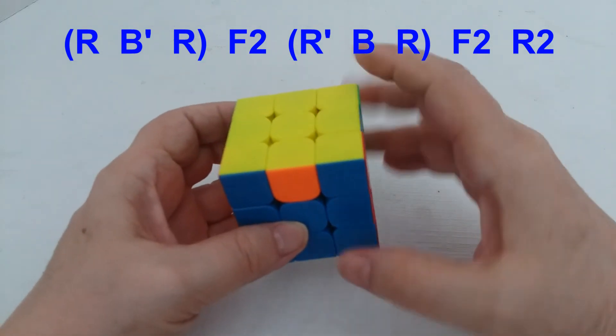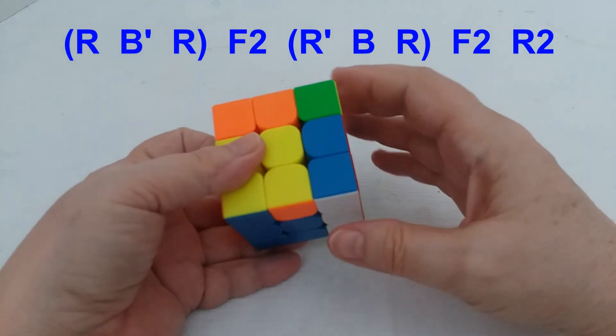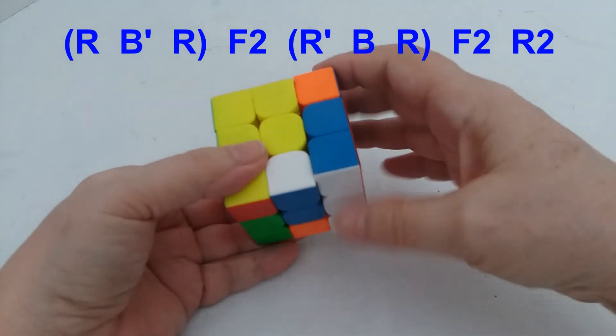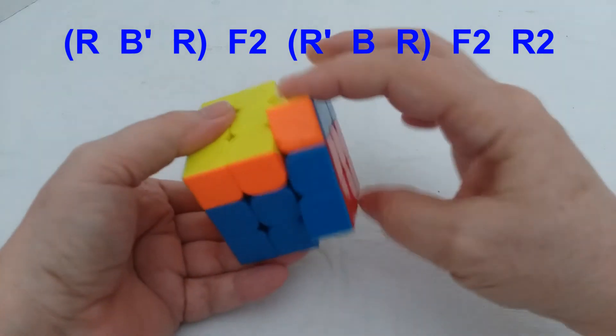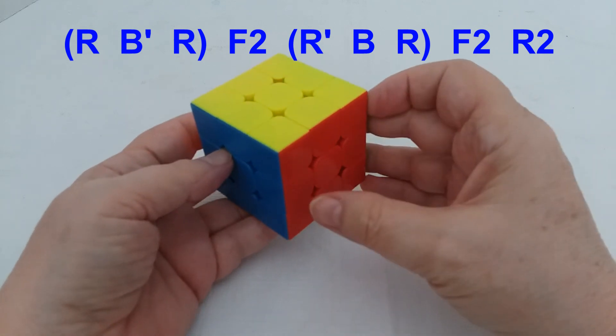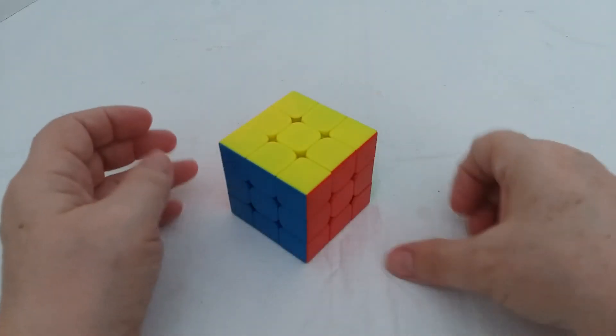So here it is again, it's just away, away, away, F2, back to me, back, away, F2, R2, and then they're solved. So that's a better way of doing adjacent corners.